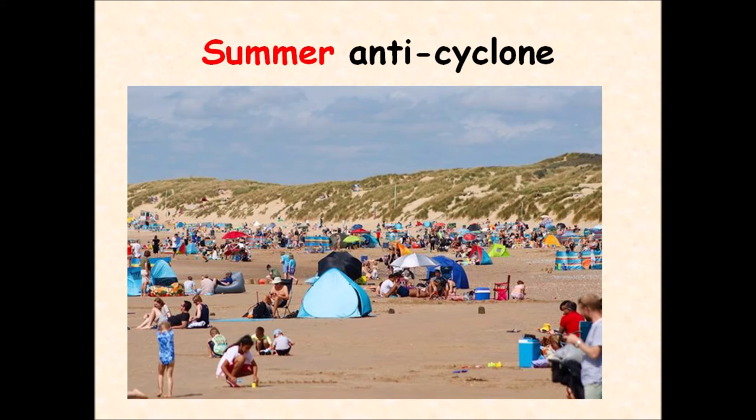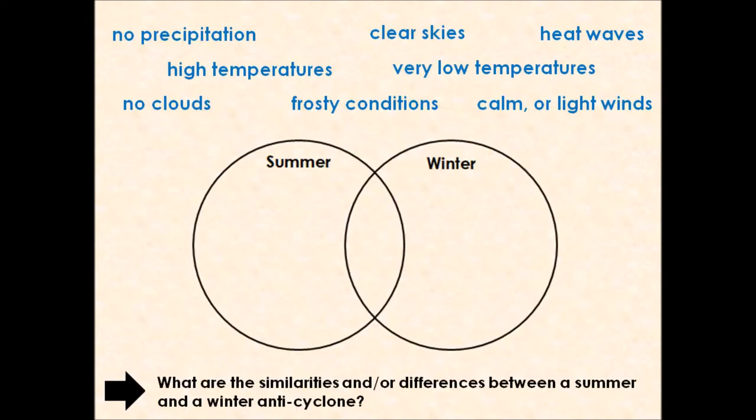If we then move on to looking at a summer anticyclone, you can see on the picture here we've got a lovely view of a beach. These people are making the most of the lovely weather, this summer anticyclone, because we are experiencing high temperatures, warm weather conditions. That might even mean we're experiencing a heat wave. Like you can see in the atmosphere, in the sky, there's very little cloud formation. We don't get any clouds in the summer anticyclone. We typically have clear skies with calm light winds, and no precipitation, so no chance of rain.